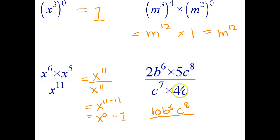And in my denominator, I've got 4 times c to the power of 7 plus 1, which is 8. Now c to the 8 divided by c to the 8 just cancels out or goes to 1. The b to the 6 just stays as b to the 6, there's nothing to do with that. And we can simplify 10 over 4 by dividing each of those by 2.